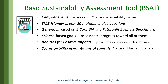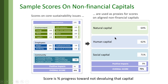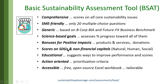We can also take those scores and translate them into how you're doing on the related SDGs and non-financial capitals. The tool automatically translates scores into scores on their related primary SDGs — environmentally related, employer-related, and community-related SDGs. It also translates these scores into scores on natural, human, and social capital. It does all of that automatically, in case that's of interest.